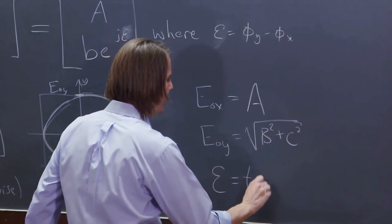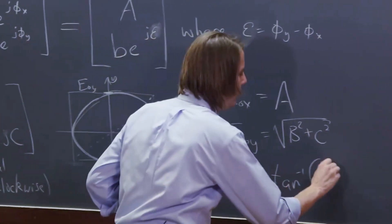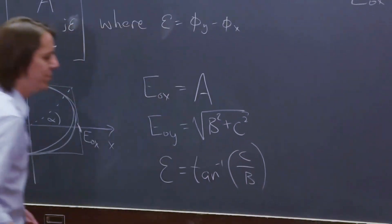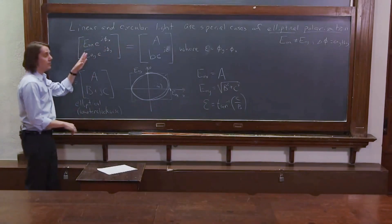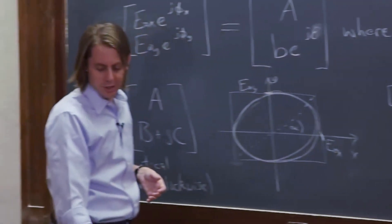And then epsilon actually isn't that hard to get to. It is the inverse tangent of C over B. And that's your phase difference and this time in terms of Y minus X instead of X minus Y.